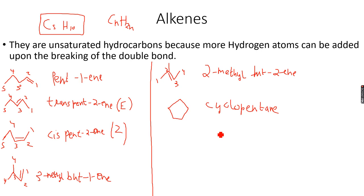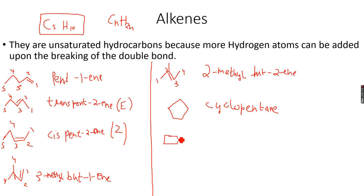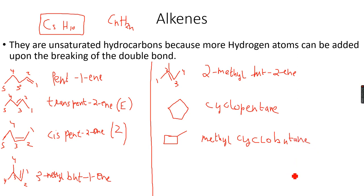Cyclopentane has no geometric isomers and no optical isomers because there are no carbon-carbon double bonds and no chiral centers. We can also have methyl cyclobutane, because there is a methyl group and the cycle has four carbon atoms. Or we can have other arrangements.